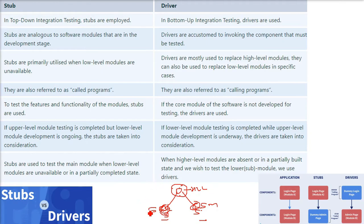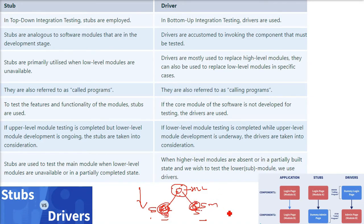Similarly, when the lower modules are ready but the upper module is not, the upper module will be written as the driver. In top-down integration testing, stubs are employed; in bottom-up integration testing, drivers are used. Both are simple pieces of code that will eventually be thrown away.